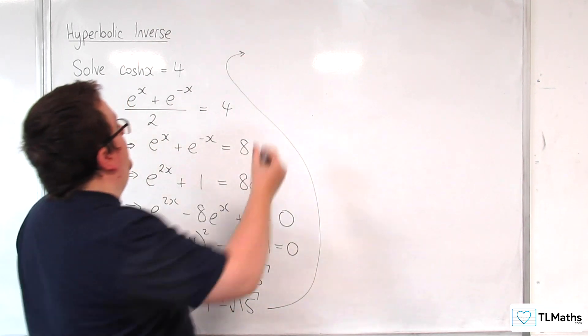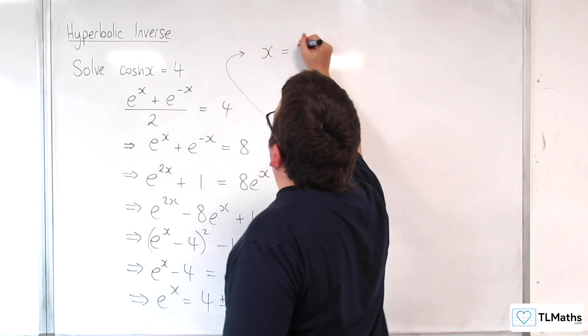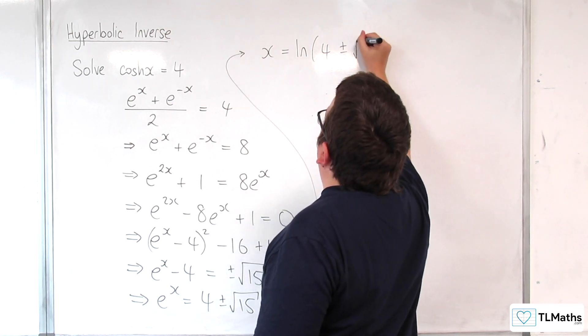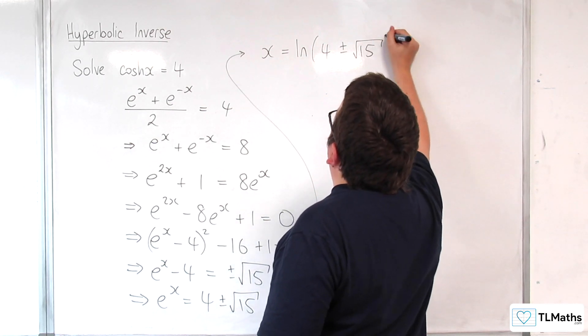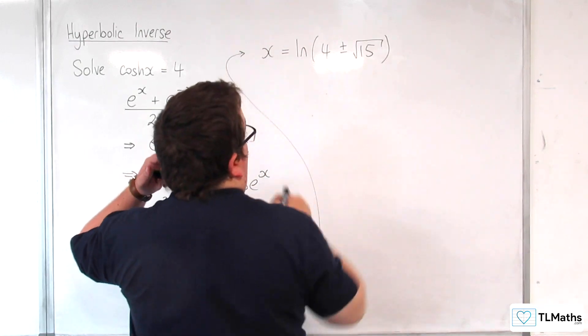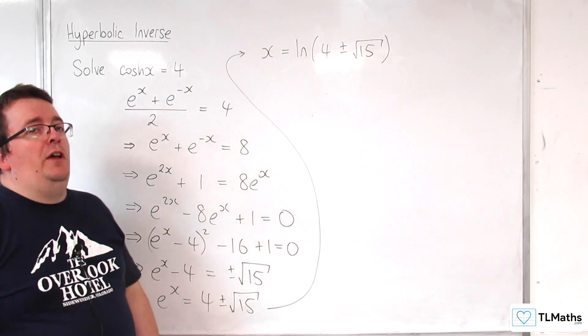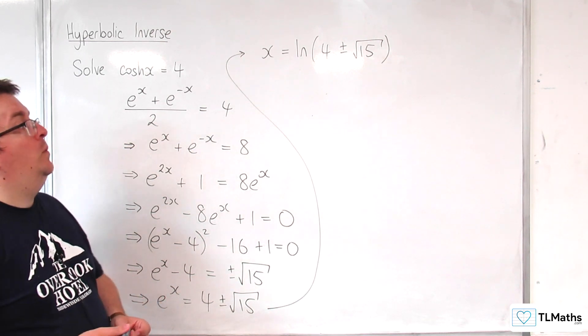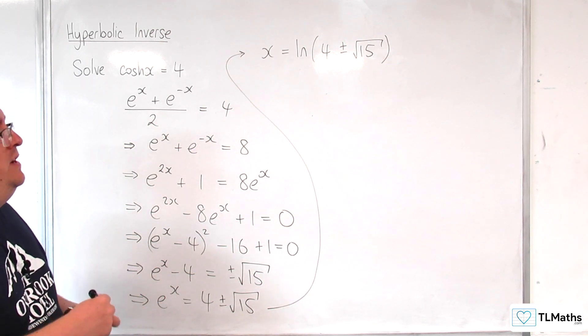Okay, so that means that x must be equal to the natural log of 4 plus or minus the square root of 15. Now 4 take away root 15 is going to be greater than 0, so that's perfectly fine. We're not taking the logarithm of a negative number there.